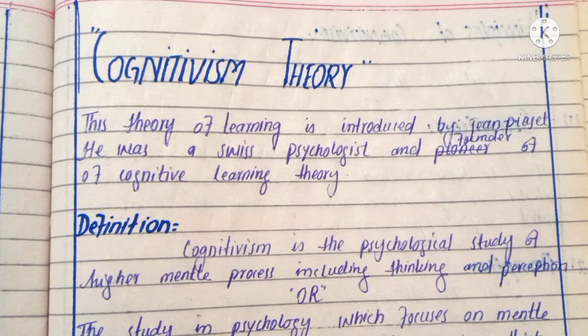یہ سب سے پہلے Jean Piaget نے introduced کی تھی۔ ان کے نام کی spelling J-E-A-N P-I-A-G-E-T ہے۔ Jean Piaget ایک Swiss psychologist تھے، اور انہوں نے Cognitivism Theory بھی introduce کی تھی جس میں learning کی four stages ہیں — کہ کس طرح سے children سٹیج بائی سٹیج learning کرتے ہیں۔